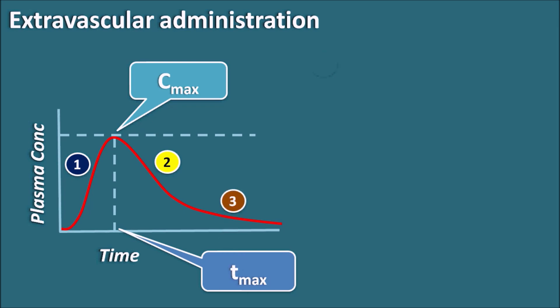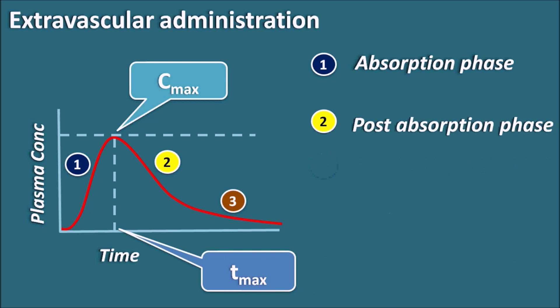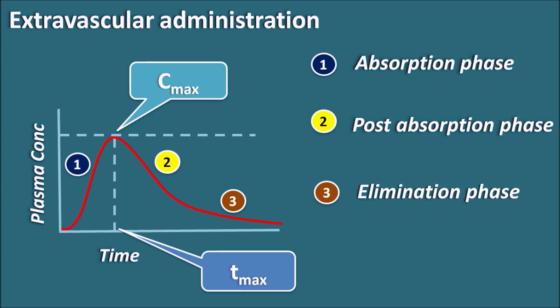The first phase is the absorption phase, where drug is absorbed from the extravascular site into systemic circulation, and absorption predominates elimination — the rate of absorption is greater than rate of elimination. Once the drug reaches peak plasma concentration, where rate of absorption equals rate of elimination, the curve falls. The second phase is the post-absorption phase, where elimination rate is greater than absorption rate. The third phase is the elimination phase, where absorption is almost complete and mainly elimination occurs.